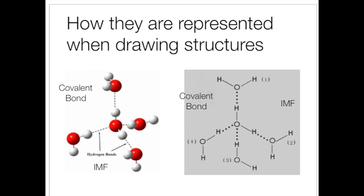Now that you know about the different types of intermolecular forces, let's take a look back at the notes. This slide asks how the different intermolecular forces are represented when drawing structures. Bonds are represented by solid lines or solid connections between two atoms — that is what a covalent bond looks like. But intermolecular forces are almost always represented by dashed or dotted lines. Since these two molecules are polar, this could represent a dipole-dipole intermolecular force. But because this involves oxygen and hydrogen, and the dipole-dipole force is between hydrogen and an oxygen on a different molecule, this is actually a specific type of dipole-dipole known as a hydrogen bond.